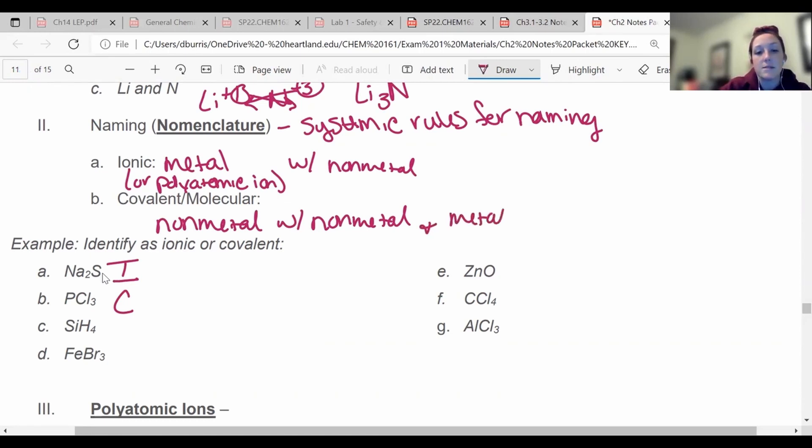Covalent and molecular can also be metalloids. So this one's covalent. Iron, that is a transition metal. It's in the middle, so it's a metal and a nonmetal, so this one's ionic. And then you should have ionic covalent ionic. So check and make sure you can find out where those are. Like I said, before you even start to name something, you have to know if it's ionic or covalent.